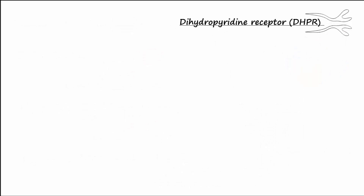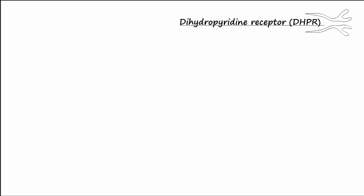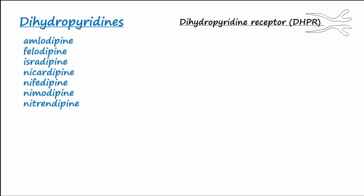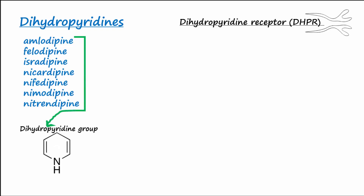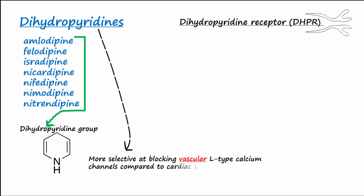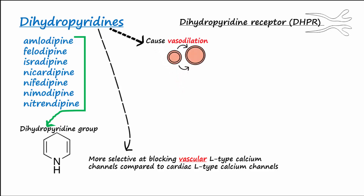The L-type calcium channel dihydropyridine receptor, or DHPR, gets its name from the drug class that blocks them — the dihydropyridines. These drugs contain the dihydropyridine group, which is a ring made of mostly carbon atoms but with one nitrogen atom. Dihydropyridine calcium channel blockers are more selective at blocking vascular L-type calcium channels compared to cardiac L-type calcium channels. Dihydropyridines cause arterial vasodilation, which decreases systemic vascular resistance, making them useful in the treatment of high blood pressure and angina.